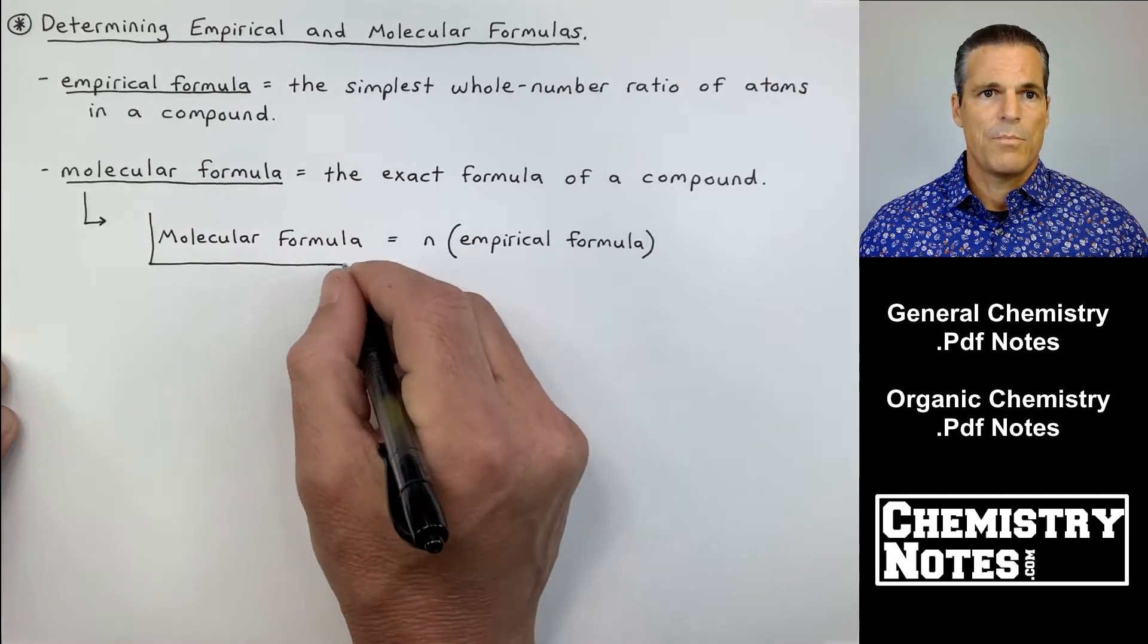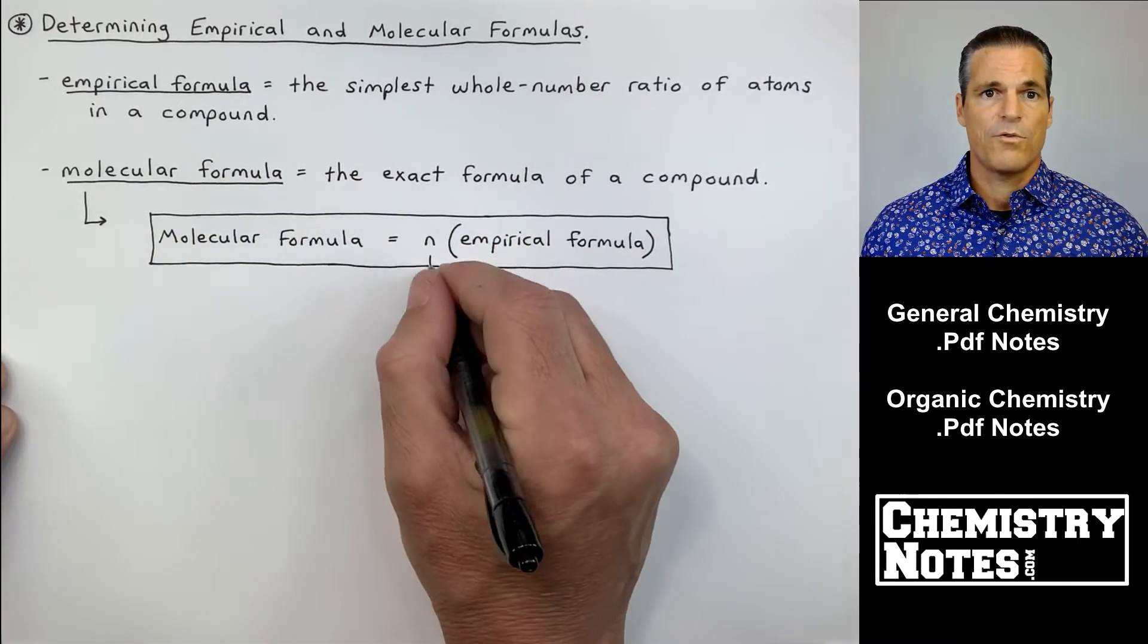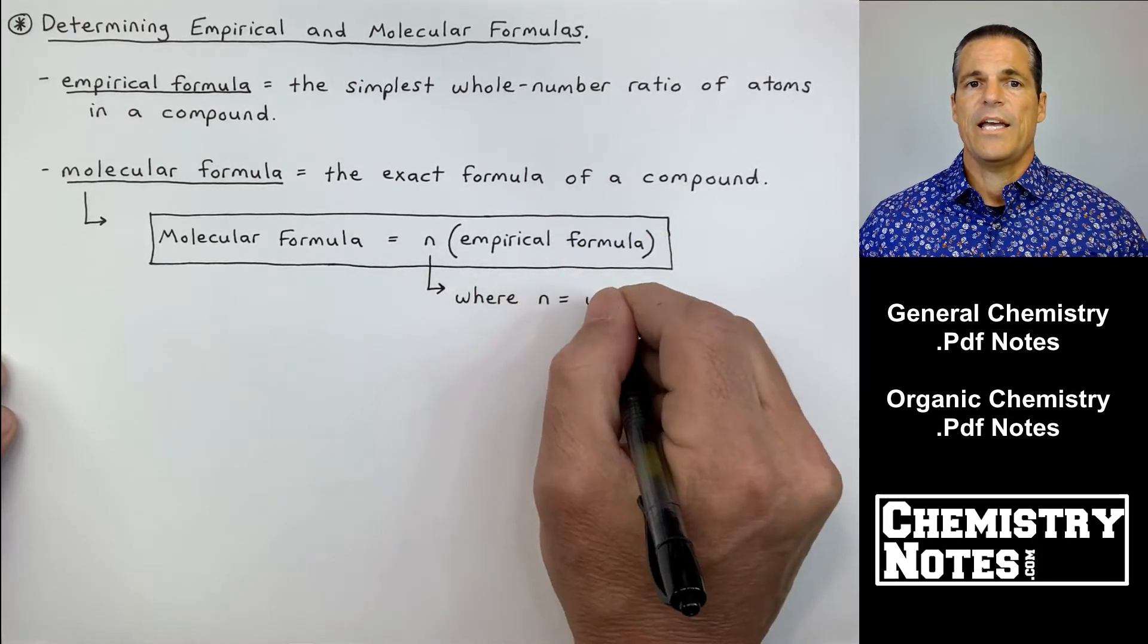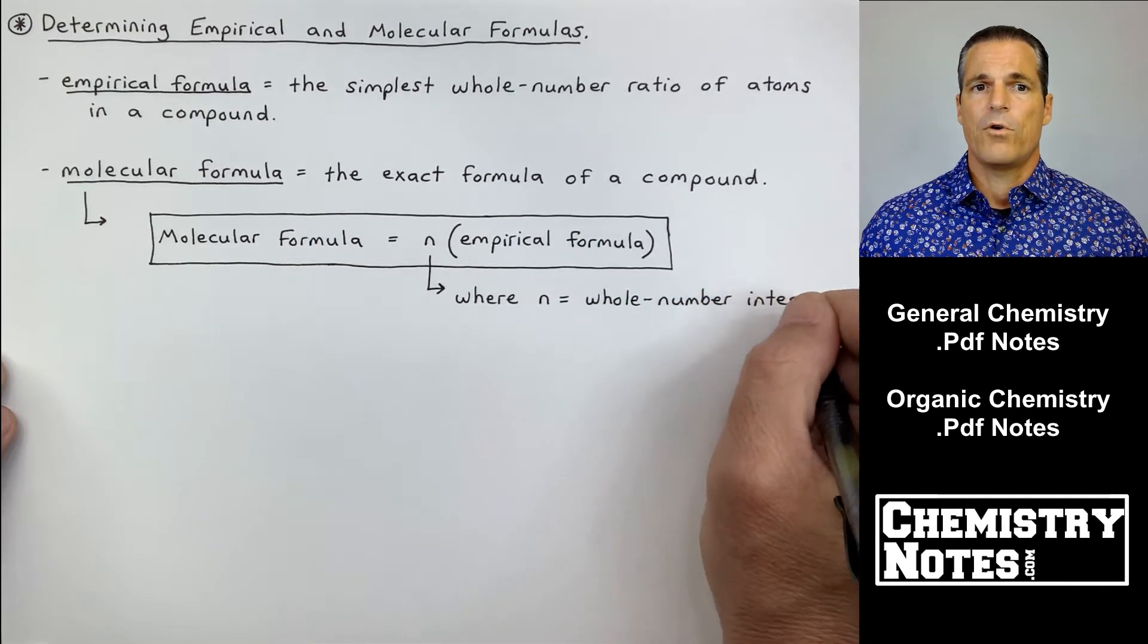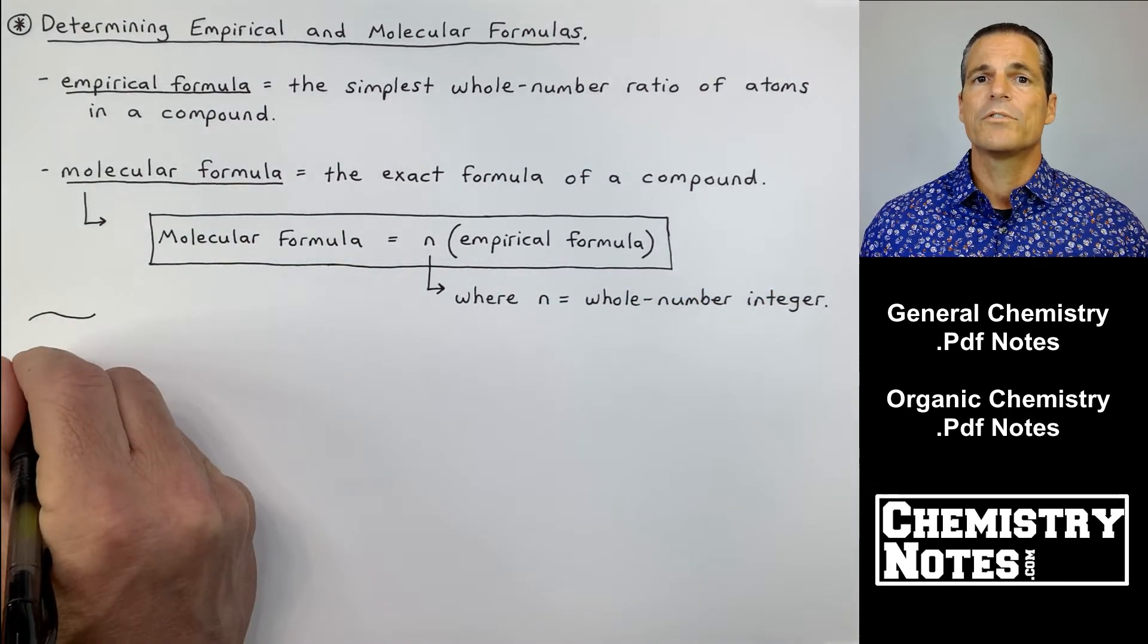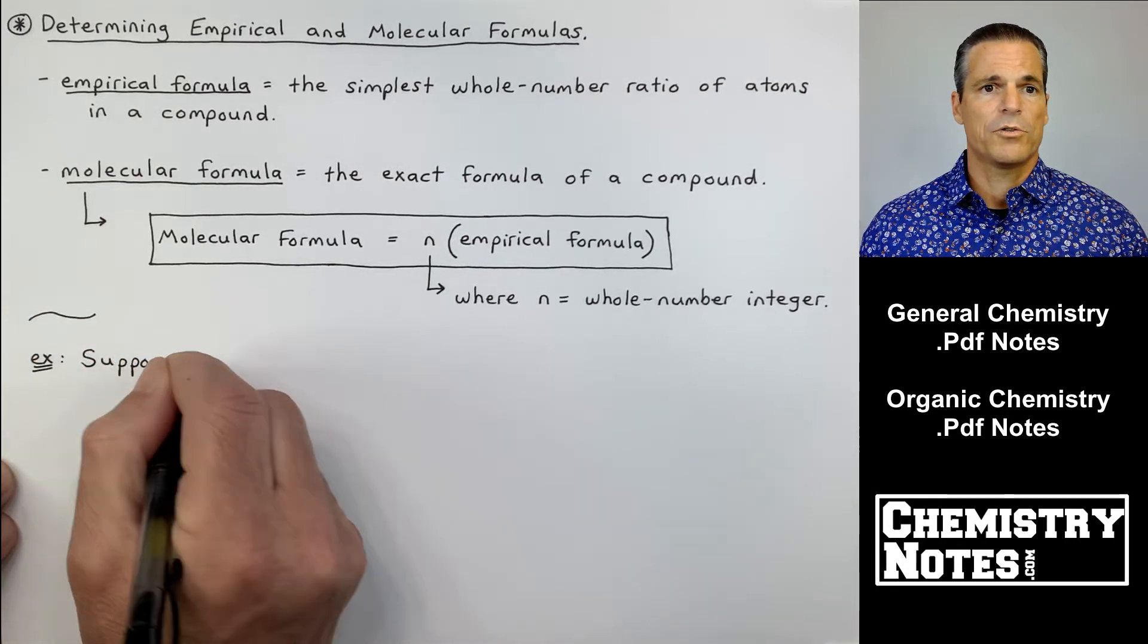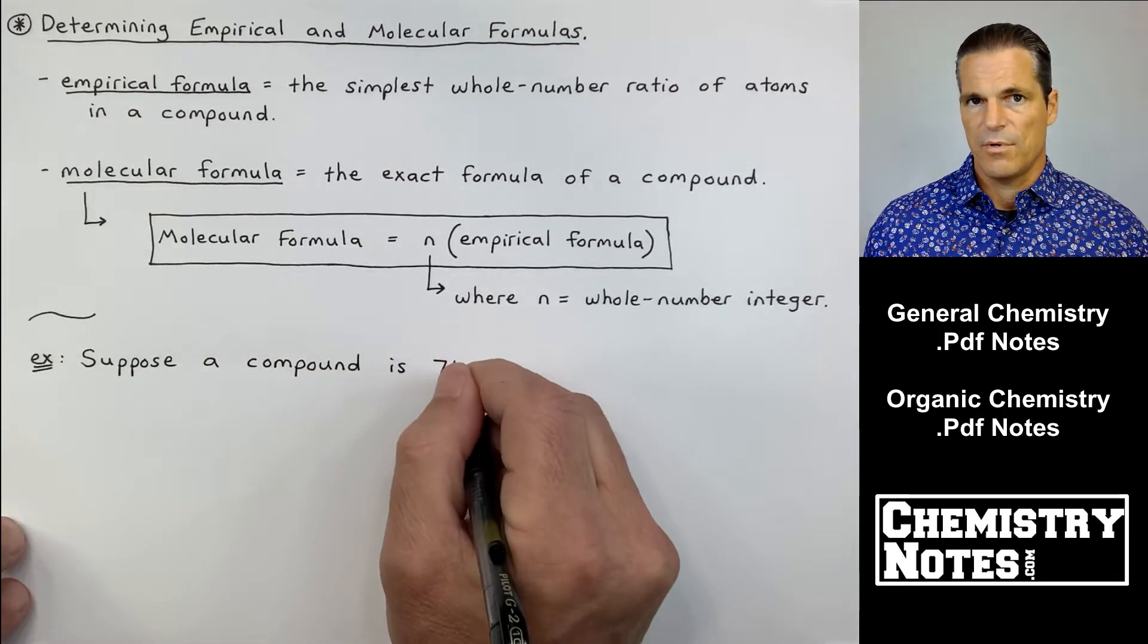Empirical formula: simplest whole number ratio of atoms in a compound. Molecular formula: the exact formula. How are they related? They're related by this formula in the box. The molecular formula equals some multiplier times the empirical formula, and this multiplier we call n, and n is the whole number integer one, two, three, etc.